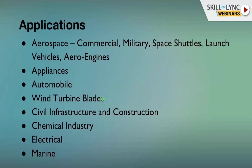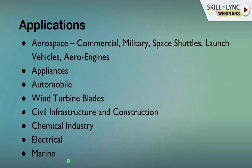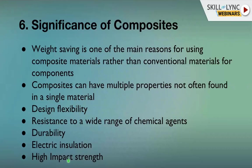Civil infrastructure and construction uses composites for structural applications. The chemical industry uses composites for tanks, hoods, and cabinets. Electrical applications include motor casings and insulation. Electronics uses composites for miniaturized chips, printed circuit boards, and electronic gears. Marine applications include boat hulls, small boards, and sea planes.